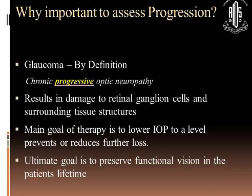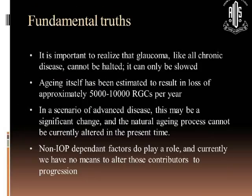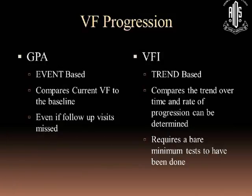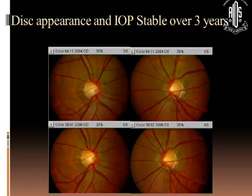As far as progression is concerned, we know glaucoma is a chronic progressive optic neuropathy. The main goal of therapy is to lower the IOP, and the ultimate aim is to preserve function. We do know that cells keep dying even normally, and all of this has been discussed.